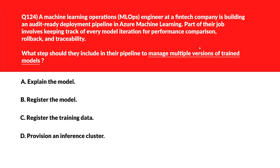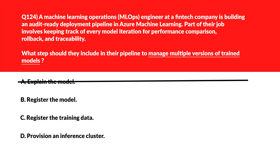Let's tackle the question about managing multiple versions of a trained model. Option A is Explain the Model — explaining the model helps interpret results but doesn't maintain model version history, so it's incorrect. Option B is Register the Model — registering the model enables version tracking across retrained models within the Azure Machine Learning workspace — let's keep this.